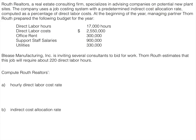In this next example, it's not a manufacturing company — this is actually a service company. Ruth Realtors, a real estate consulting firm, specializes in advising companies on potential new plant sites. The company uses a job costing system with a predetermined indirect cost allocation rate computed as a percentage of direct labor cost. So there's our allocation base — direct labor cost — and we're going to end up with a percentage as our rate. At the beginning of the year, managing partner Tom Ruth prepared the following budget, giving us direct labor hours, direct labor cost, office rent, support staff hours, and utilities.